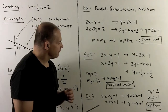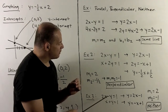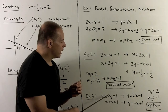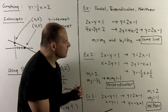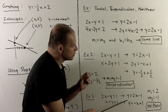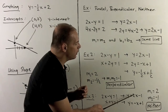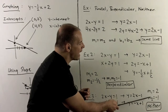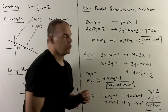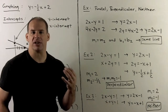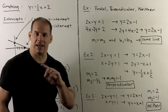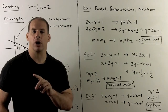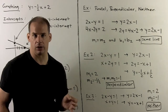Last case: 2x minus y equals 1 and x plus y equals 1. Isolating y's gives slopes equal to 2 and minus 1. These are not equal, and their product equals minus 2, not minus 1. So they're neither parallel nor perpendicular.